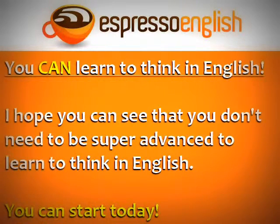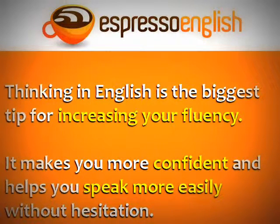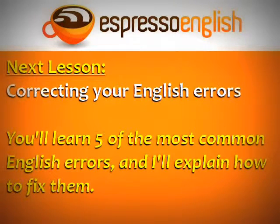You don't need to be super advanced to learn to think in English — you can start today. Try one of the four levels this week: thinking in individual words, complete sentences, functional English, or narrative English. Thinking in English is the biggest tip for increasing your fluency because it makes you more confident and helps you speak more easily without hesitation. The next lesson is about correcting your English errors — you'll learn five of the most common English errors and how to fix them.